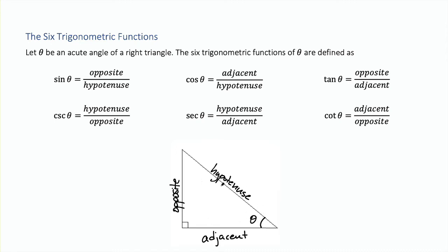Now we can combine those three sides in six different ways, and these are the six trigonometric functions. The sine of an angle takes the opposite side and divides by the hypotenuse. The cosine of an angle takes the adjacent side and divides by the hypotenuse. And the tangent of an angle takes the opposite side and divides by the adjacent.